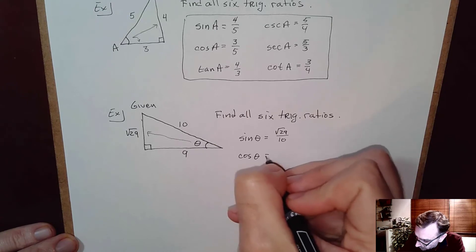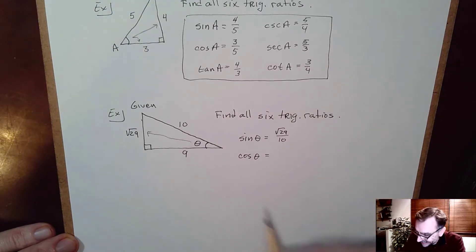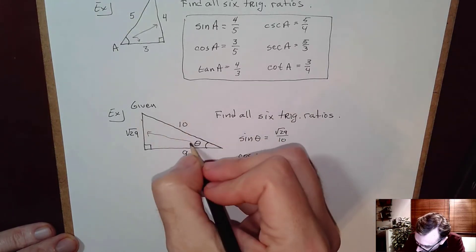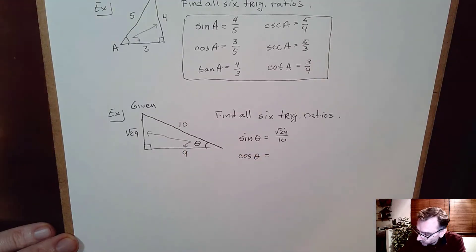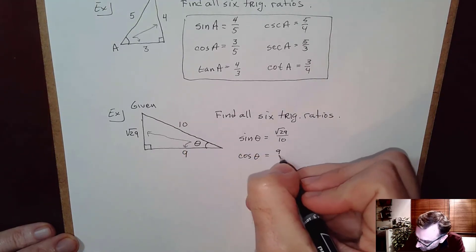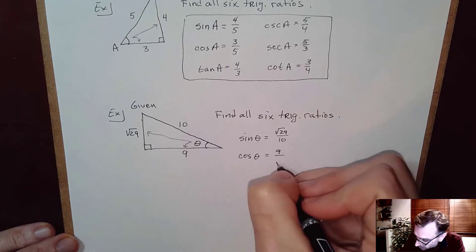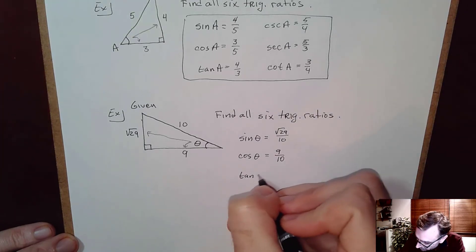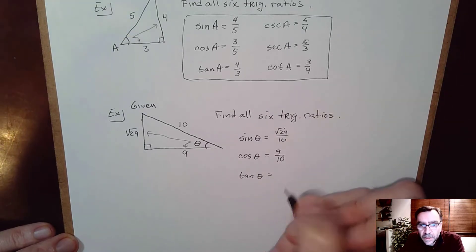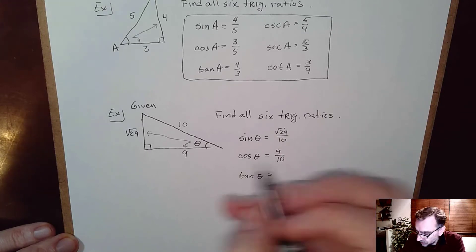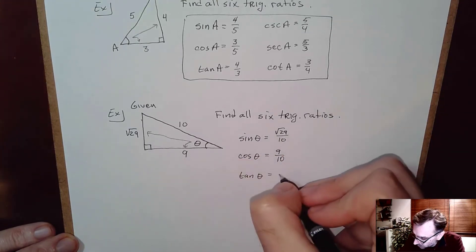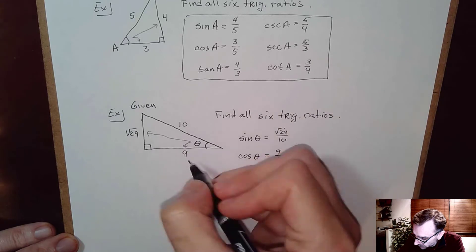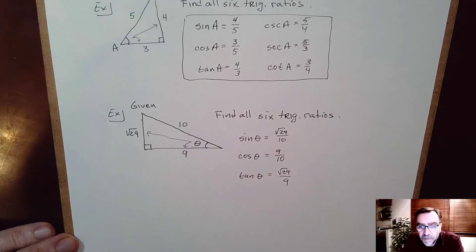Cosine of theta is defined as the side adjacent over the hypotenuse. The adjacent side is 9 and the hypotenuse is 10, so cosine of theta is 9/10. Tangent of theta is the side opposite over adjacent, so √29 over 9.